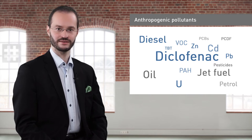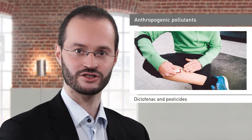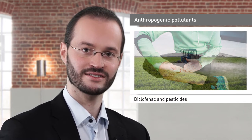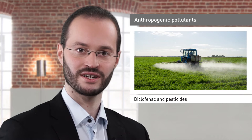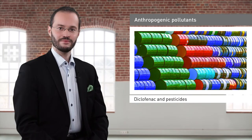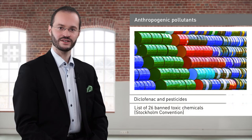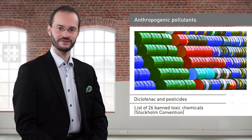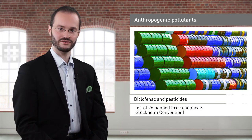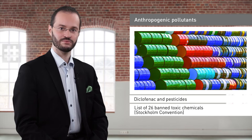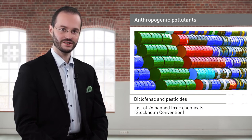These are contaminants which were released into the environment by human activities. The substances in question range from diclofenac, used in painkillers and gels, and pesticides to the persistent organic pollutants, POPs, banned under the Stockholm Convention of the 22nd of May 2001. Since this treaty was signed, the original list of 12 POPs, the so-called dirty dozen, has been extended to include some 26 toxic chemicals.